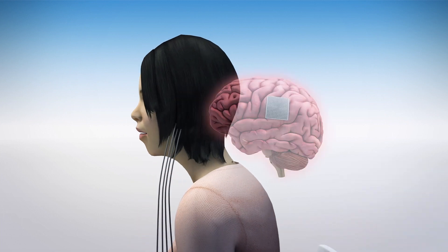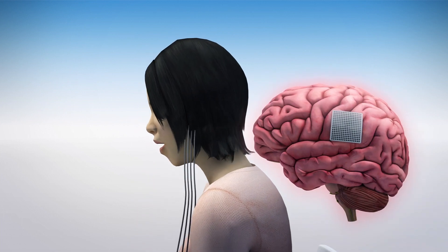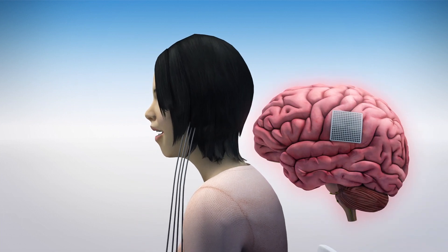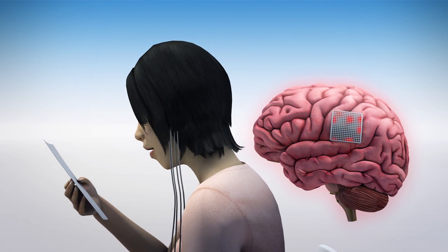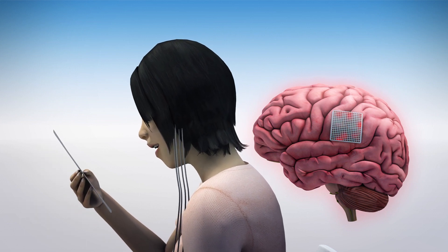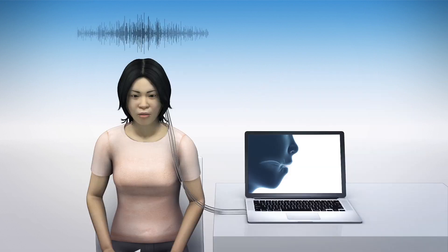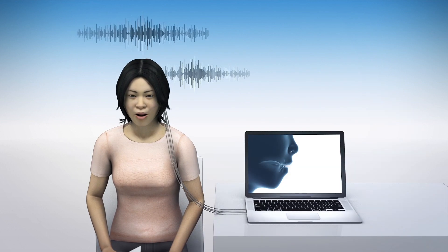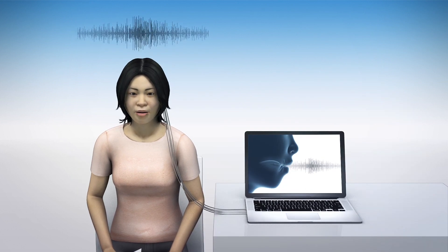The team recorded brain signals of subjects that already had electrode arrays implanted in their brains for previous medical procedures. Subjects would read sentences out loud while the researchers captured the signals through the electrodes. They then analyzed the audio and observed which muscles were activated at different points during speech.